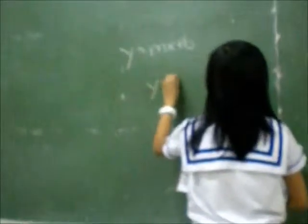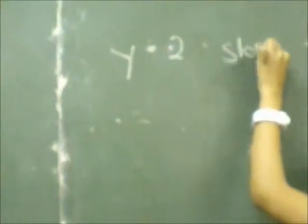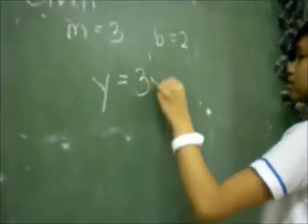For example, write the slope-intercept form of a line where m equals 3 and b equals 2. You simply substitute into the slope-intercept form, so the equation is y equals 3x plus 2.